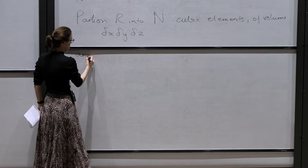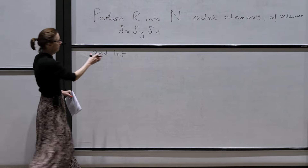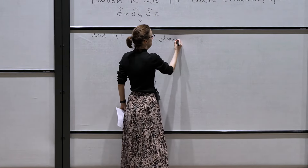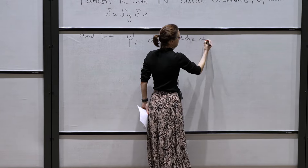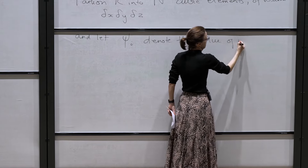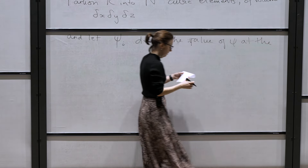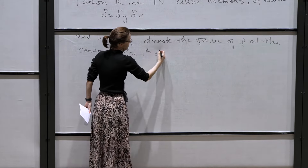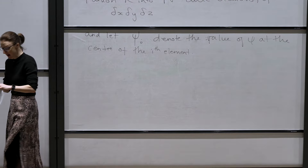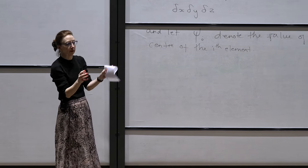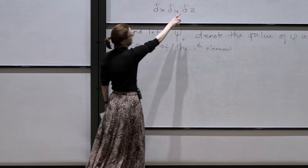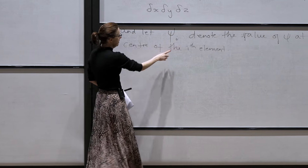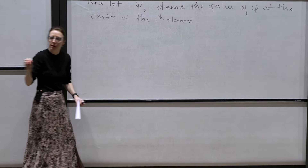We let psi_i denote the value of psi at the center of the i-th element. It doesn't even have to be at the center — just as an informal description, we'll define it to be at the center. So we take R, chop it up into lots of volumes of volume delta x, delta y, delta z, and we give the scalar function psi a value on each little cube, denoted psi_i, where i counts over the number of cubes.